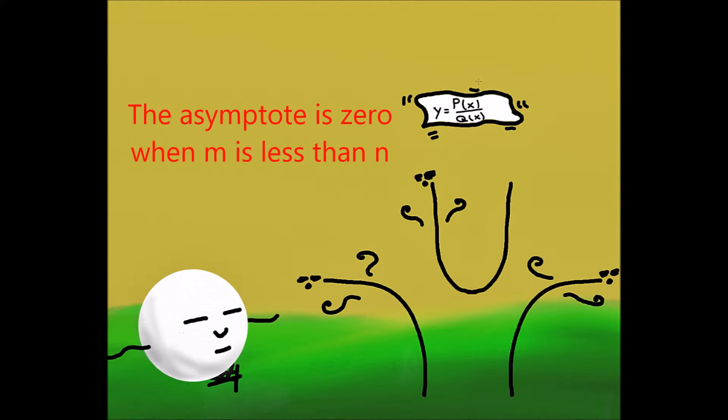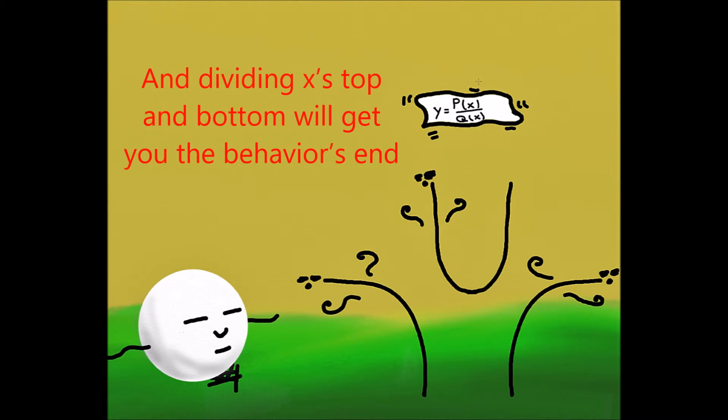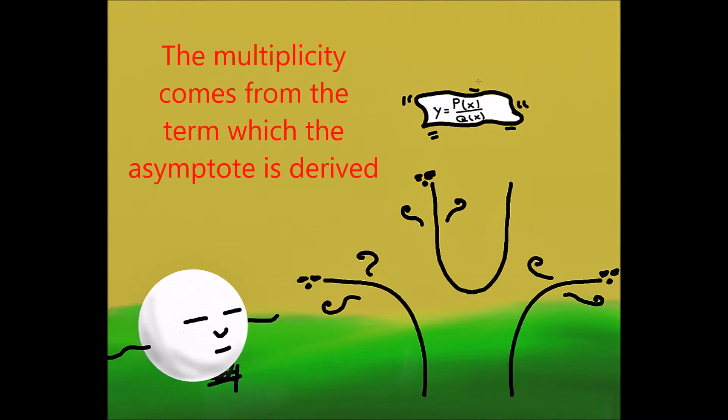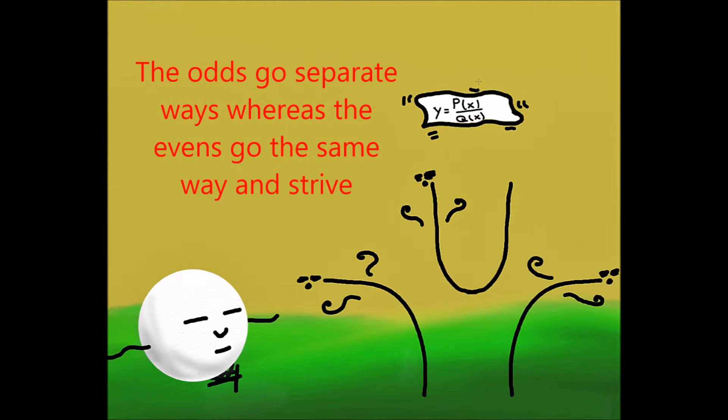The asymptote is 0 when m is less than n, and dividing x's top by bottom will get you the behavior's end. The multiplicity comes from the term which the asymptote is derived. The odds go separate ways, whereas the evens go the same way, and strive.